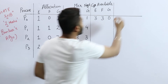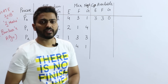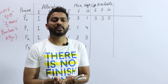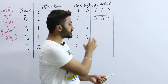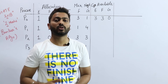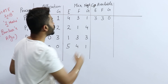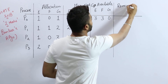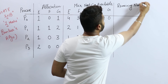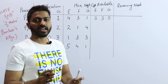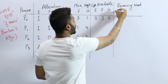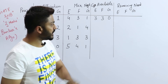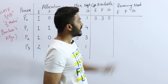The question asks us to check whether there is a safe sequence or not — in other words, whether this state will lead to a deadlock situation. To analyze this, we first need to find the remaining need of every process for each resource type.